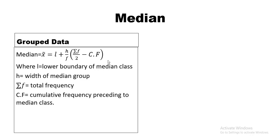An important point is that we need to first determine which class is our median class. We use the part ΣF/2 of the formula to find the median class — this helps us identify exactly which class the median falls in.